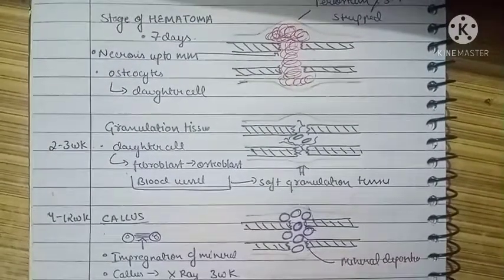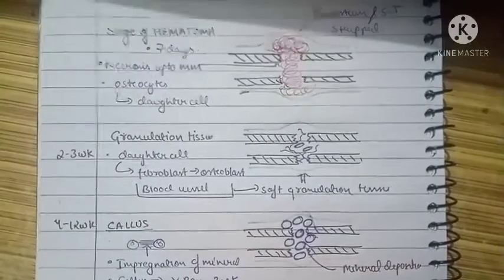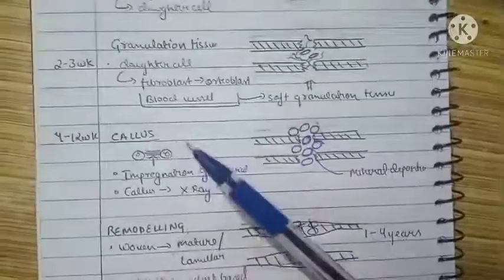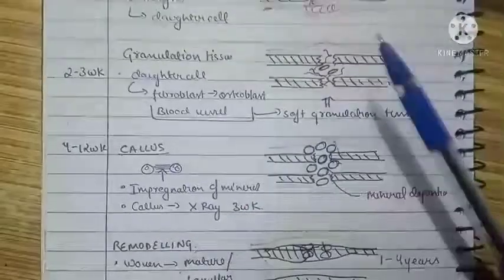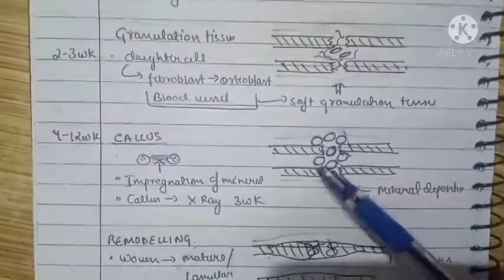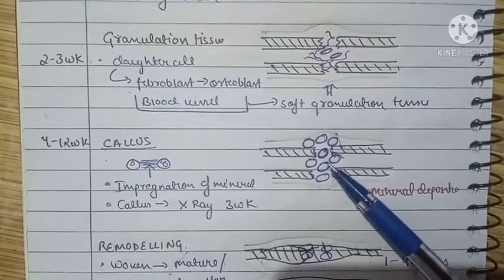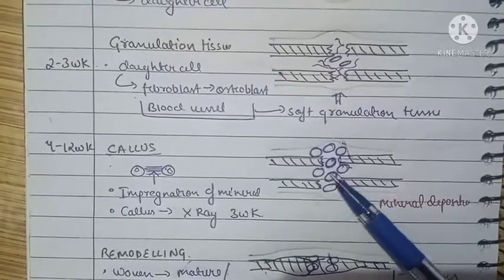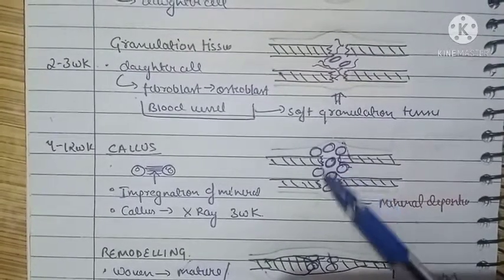After stage of hematoma and granulation tissue, we have formation of callus. We already had formation of osteoblasts from fibroblasts. These osteoblasts start to divide at the site of fracture and multiply in large numbers at the site of fracture.